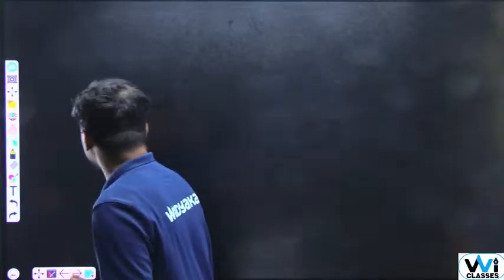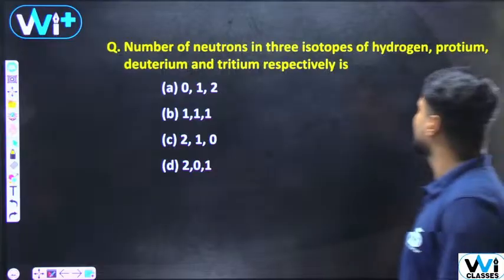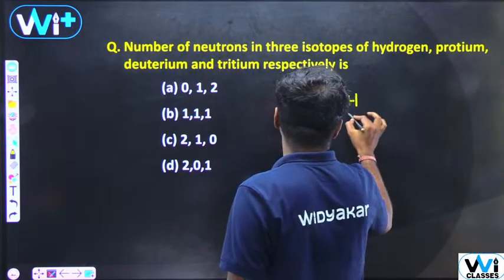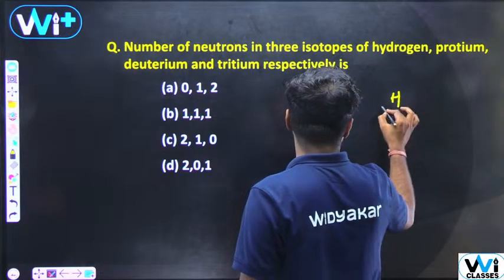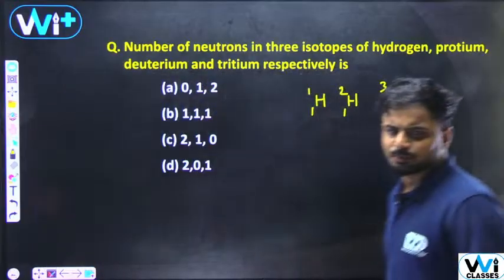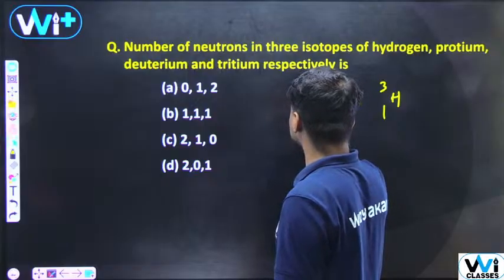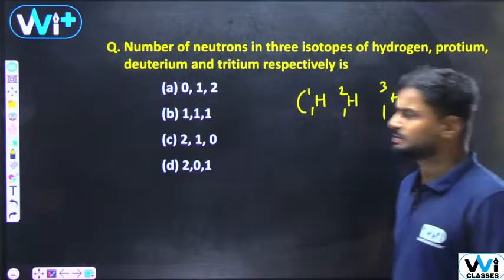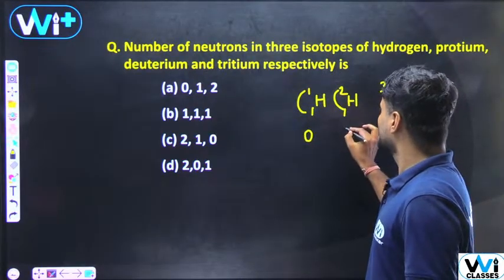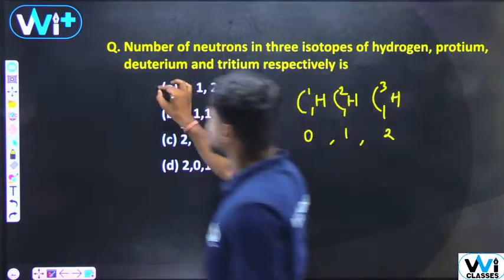The number of neutrons in the three isotopes of hydrogen — protium, deuterium, tritium — this difference is known as two neutrons. So 0, 1, 2 is the order of number of neutrons.